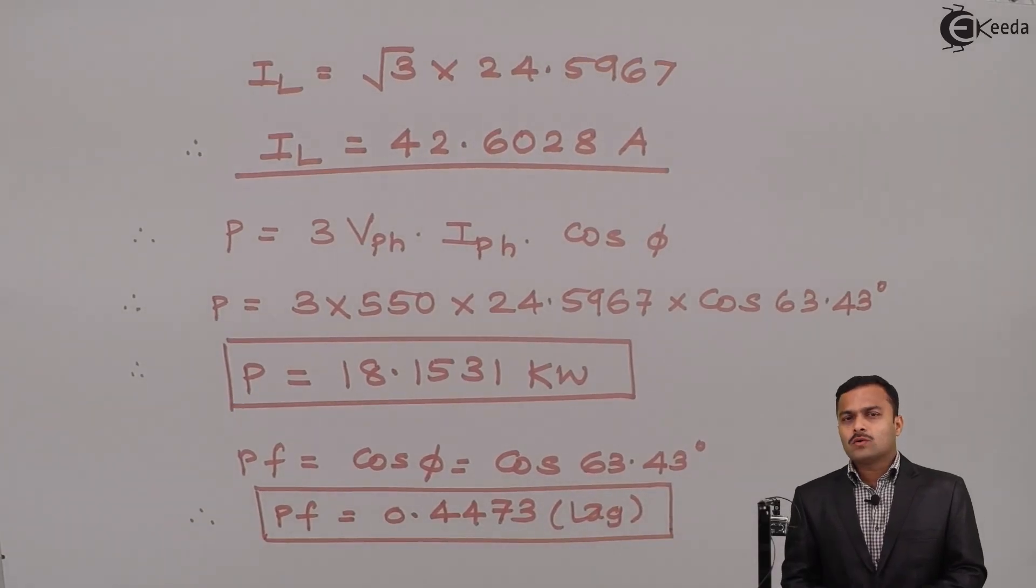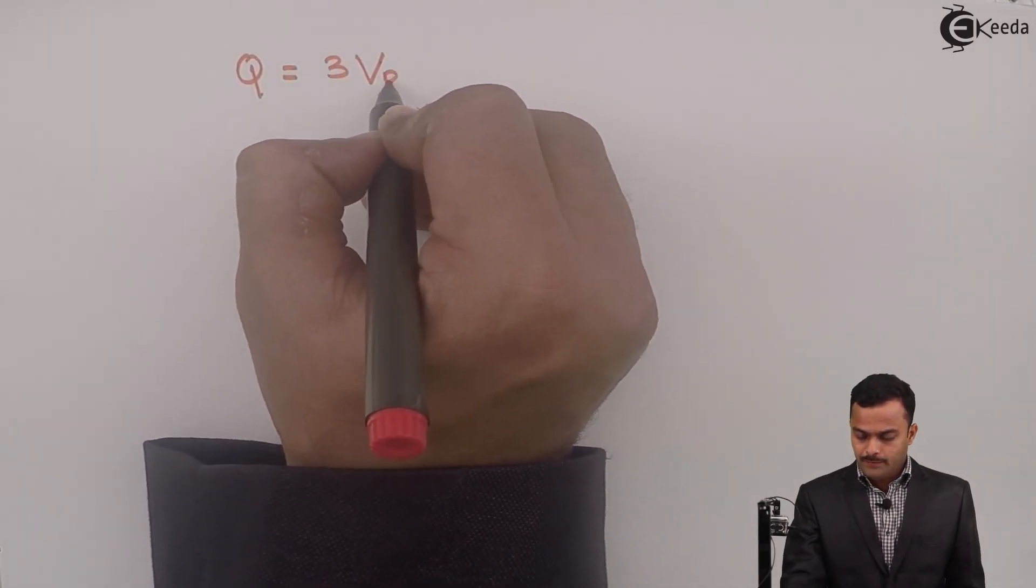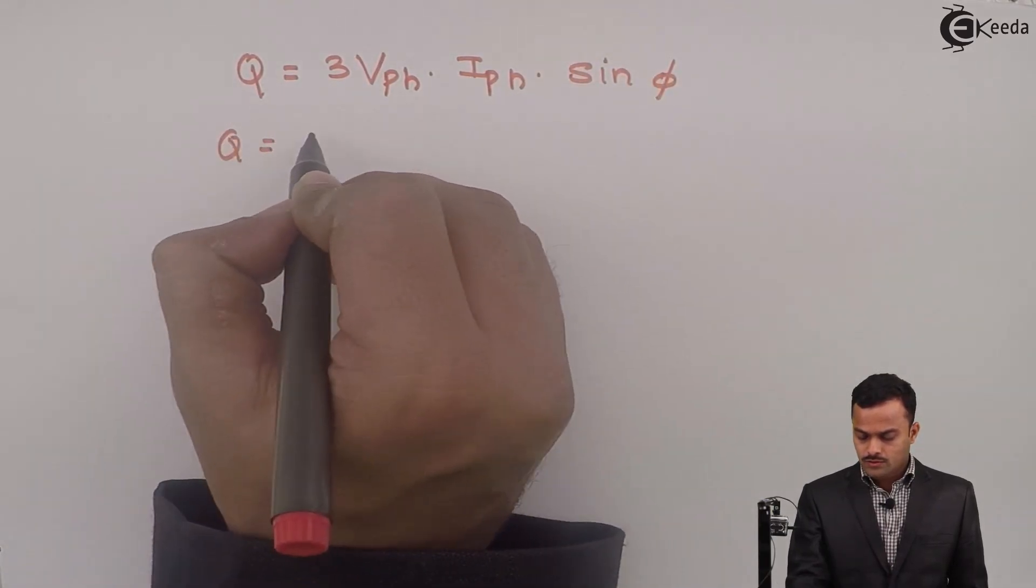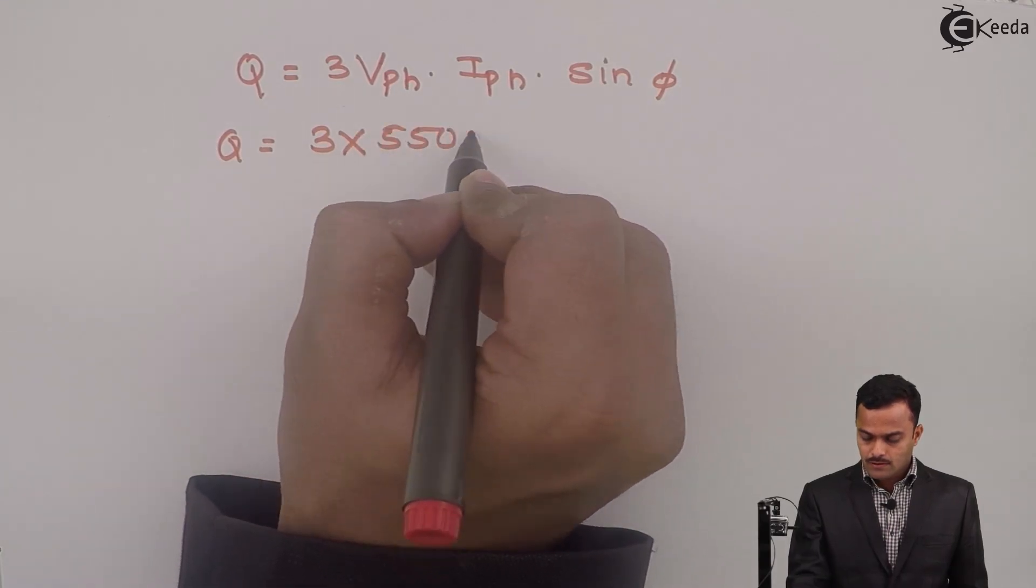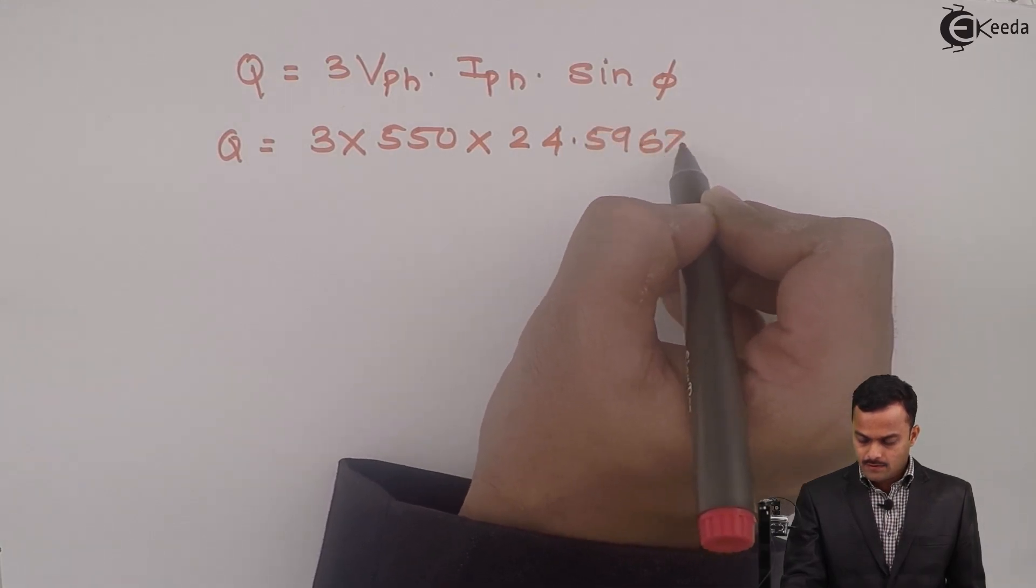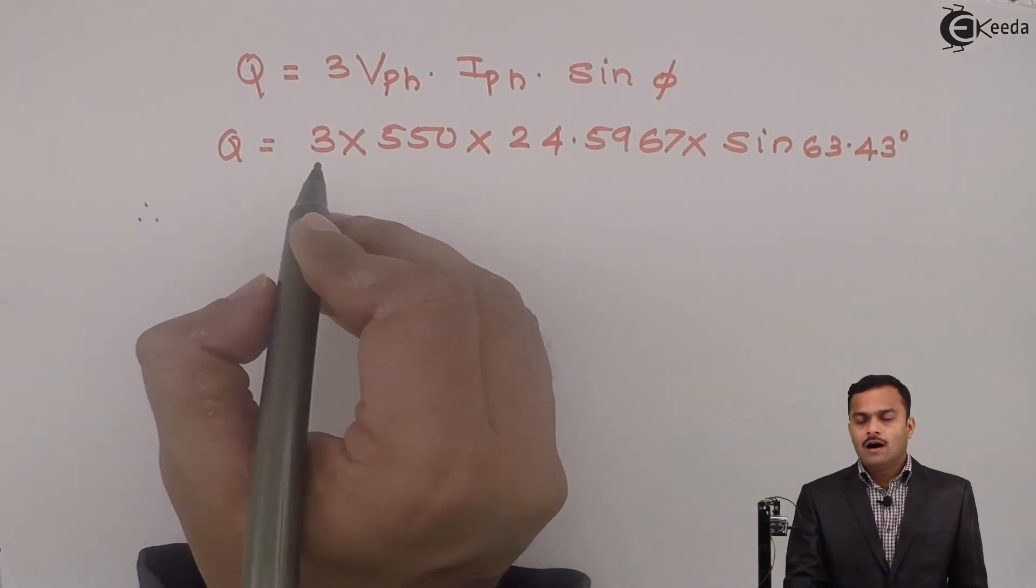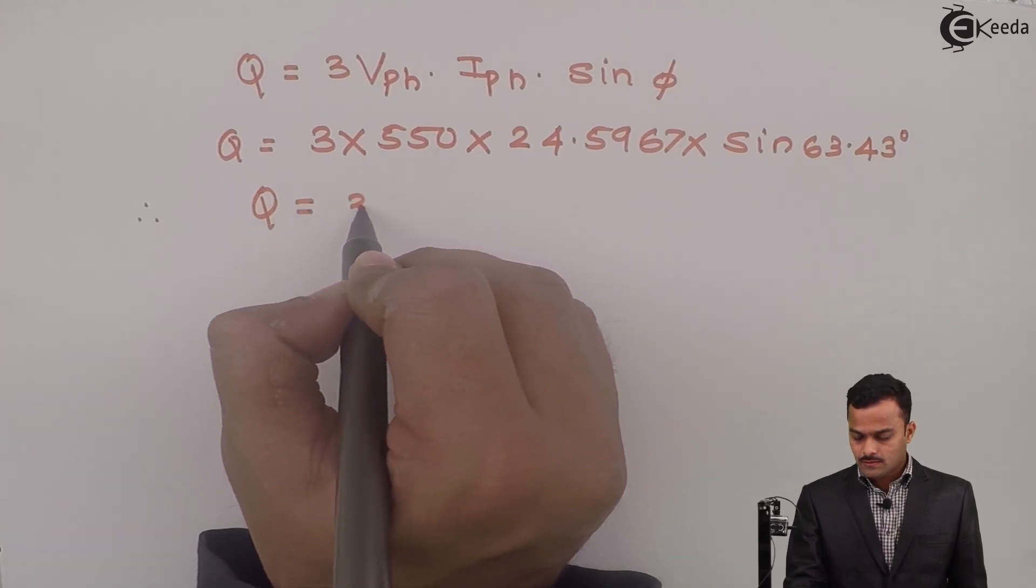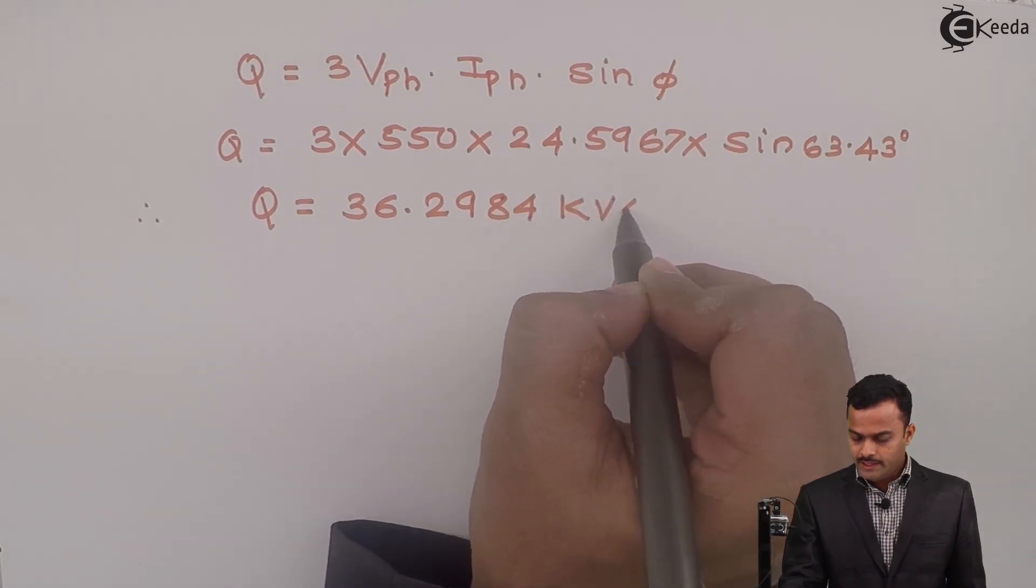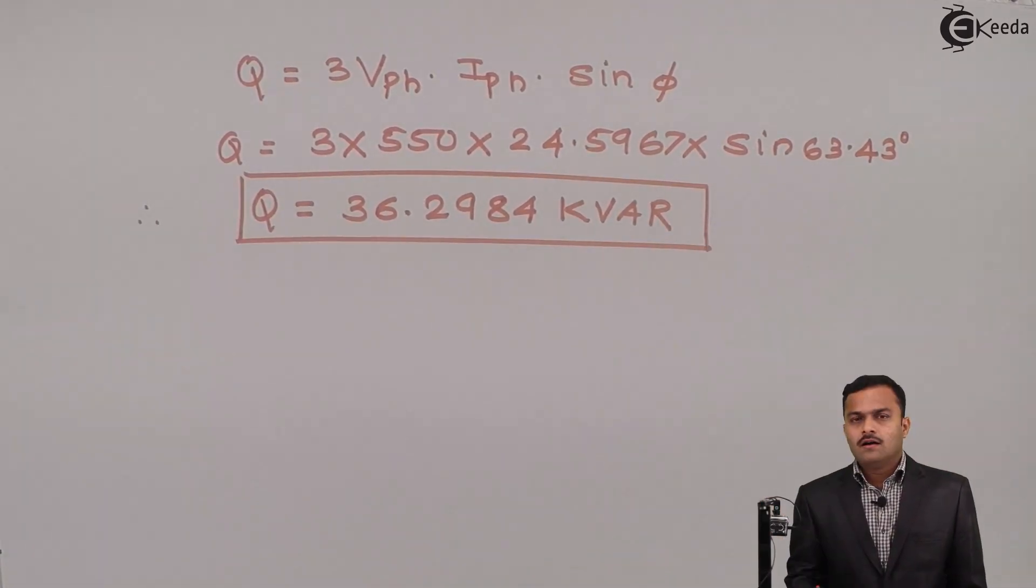Let's calculate reactive power Q equal to 3 VPH IPH sin phi equal to 3 into 550 multiplied by 24.5967 multiplied by sin 63.43. After solving this I will get Q as 36.2984 kVAr, kilo volt ampere reactive.